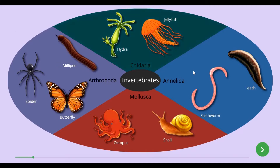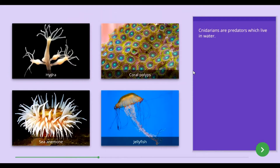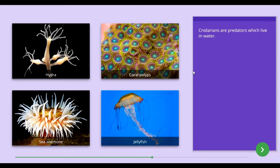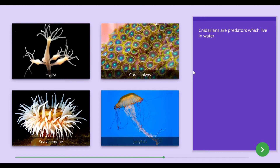From these four groups of invertebrates, we will first study about the Cnidaria group. Cnidarians are predators which live in water. Hydra, coral polyps, sea anemone, and jellyfish are examples of animals that belong to the Cnidaria group.